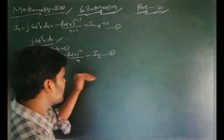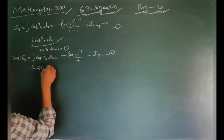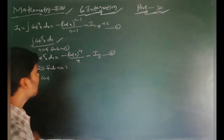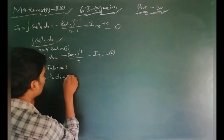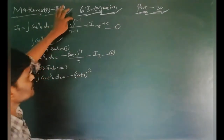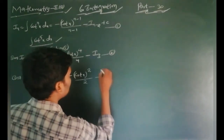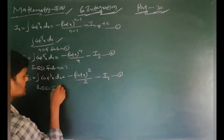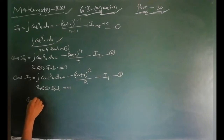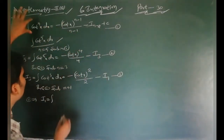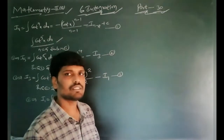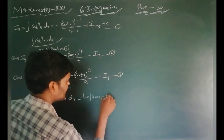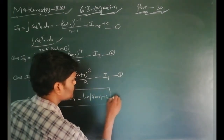Since I_3 appears, substitute n equals 3 into equation 1: I_3 equals integral of cot³ x dx equals minus cot² x divided by 2 minus I_1. This is equation 3. Now substitute n equals 1: I_1 equals integral of cot x dx. The integration of cot x is log|sin x| plus c. Substitute this value into equation 3.